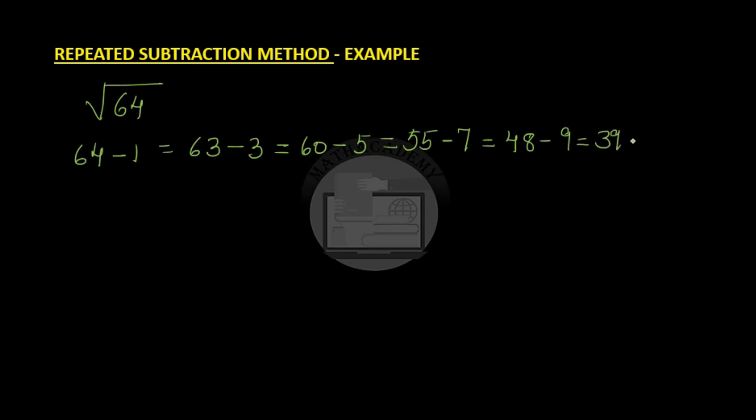Let us count the steps we are taking: 1, 2, 3, 4, 5, 6, 7, and 8 steps. This means that square root of 64 is 8. I hope this repeated subtraction method is clear to everyone.